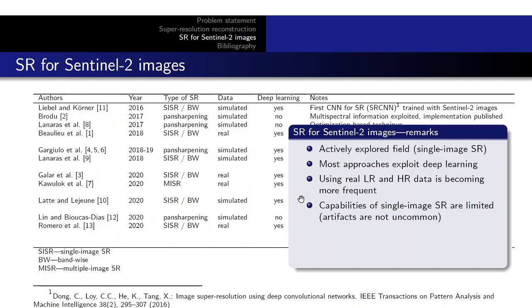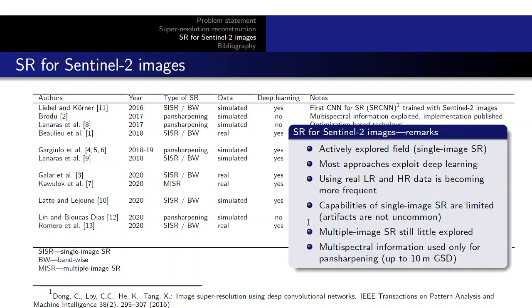However, it must be noted that the capabilities of single-image super-resolution are quite limited, and very often artifacts are observed, especially for high magnification factors. This highlights potential research gaps: multiple-image super-resolution is still little explored, and multispectral information is used mainly for pan-sharpening, which allows for improvement only up to 10 meters GSD.